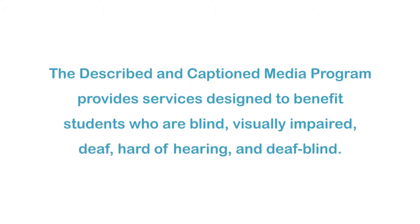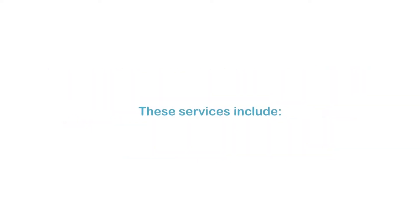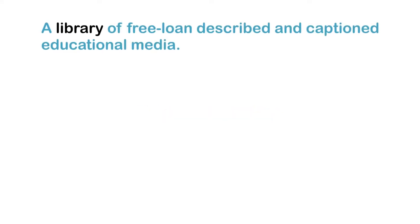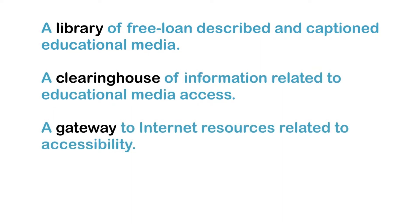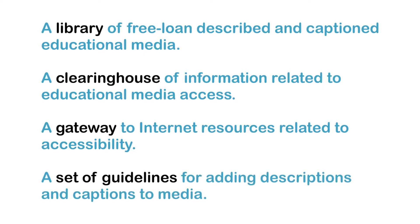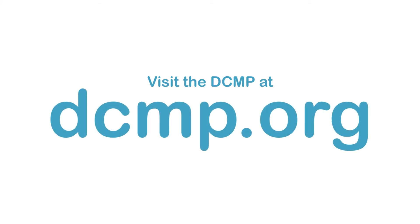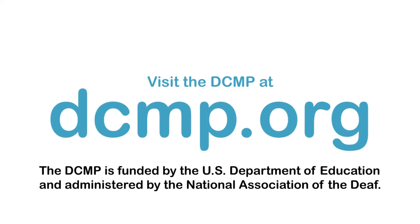The Described and Captioned Media Program provides services designed to benefit students who are blind, visually impaired, deaf, hard of hearing, and deafblind. These services include a library of free loan described and captioned educational media, a clearinghouse of information related to educational media access, a gateway to internet resources related to accessibility, and a set of guidelines for adding descriptions and captions to media. There are no user registration or service fees. Visit the DCMP at DCMP.org. The DCMP is funded by the U.S. Department of Education and administered by the National Association of the Deaf.